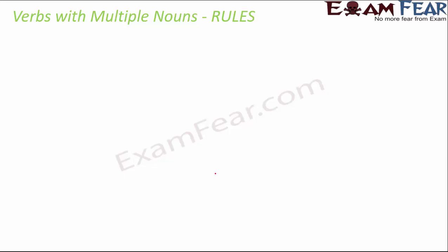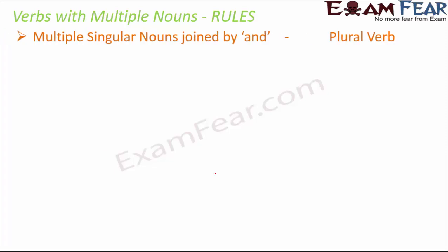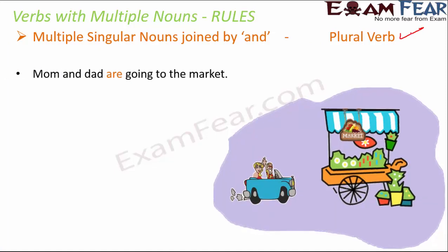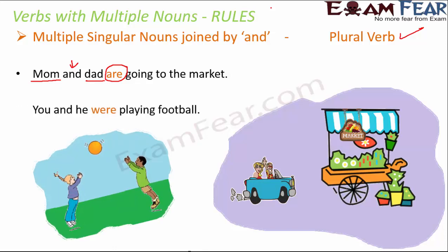There are a set of rules to remember. The first rule: if you have multiple singular nouns joined by 'and', we use a plural verb. For example, 'Mom and dad are going to the market.' Here 'mom' is singular, 'dad' is singular, both joined by 'and', so we use the plural form 'are'. Similarly, 'You and he were playing' — both 'you' and 'he' are singular, joined by 'and', so we use the plural verb 'were'.